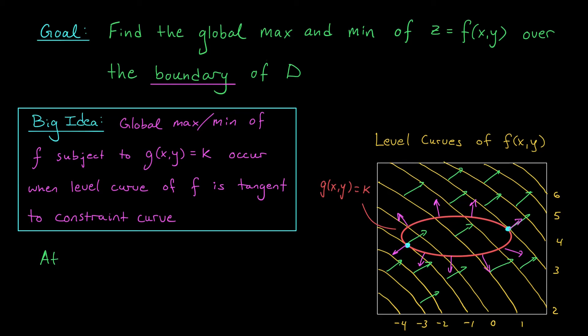At the points where the level curves are just tangent to the constraint curve, the gradient of f is going to be a scalar multiple, a multiple lambda, of the gradient of g. This is sometimes called the Lagrange equation, and this is the equation that we're going to solve when looking for these points.